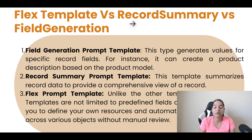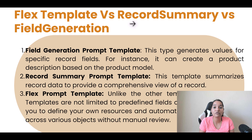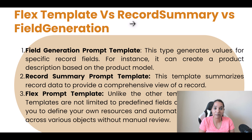Similarly, you have the record summary prompt template. This particular template summarizes the record. So if you want to highlight certain information from your record and get a concise view rather than glancing through all the fields, you want only a summary of the whole record — in that case you're going to use record summary.